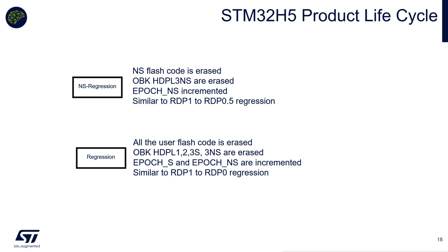Regarding a full regression: everything is erased — the complete content of the OBKey, the user flash (secure and non-secure) — and a second epoch counter is incremented.